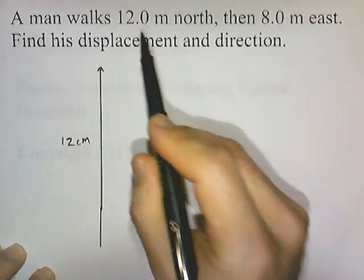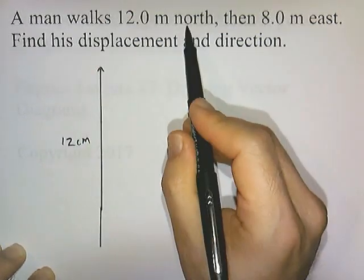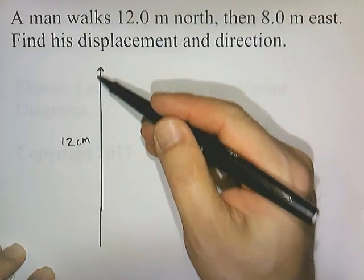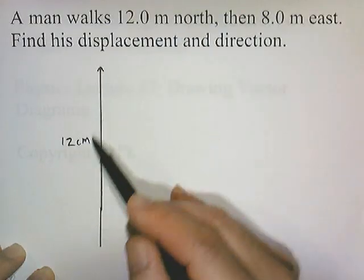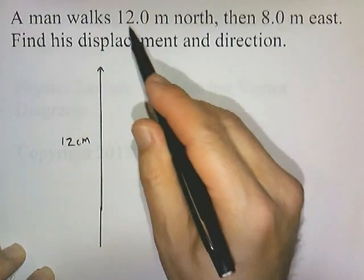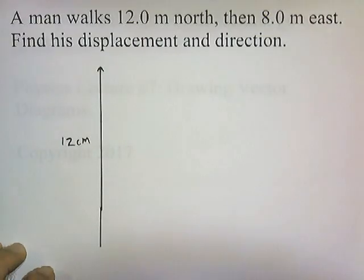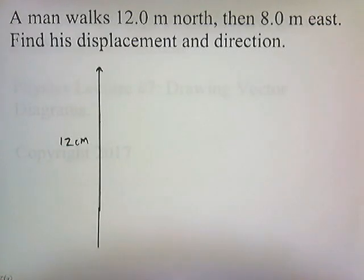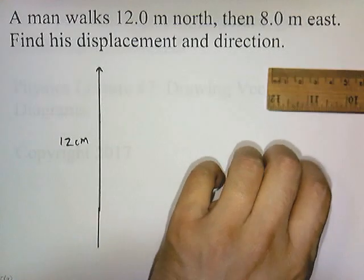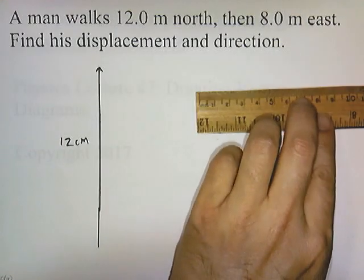Our first vector represents 12 meters north — we draw a line pointing up or north and make it 12 centimeters long to represent 12 meters. The second vector is 8 meters east, which we represent with an 8 centimeter line.